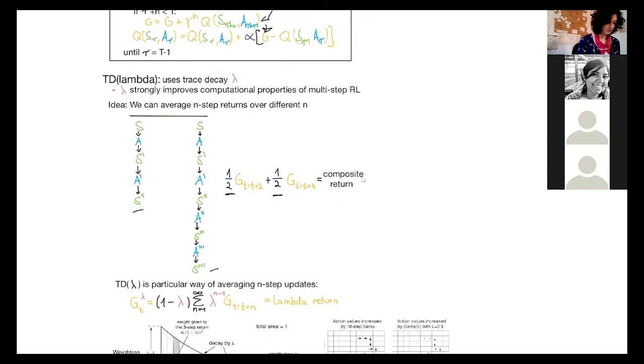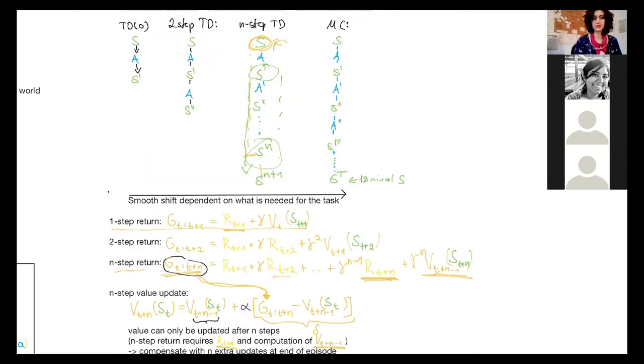And in TD lambda, you don't weigh them by 0.5, but you weigh them according to how big n is. So how long is this return over how many time steps? So lambda is, gamma is for the value estimates. So the discounting the rewards and lambda is how do I weigh the overall n-step rewards for different ends.